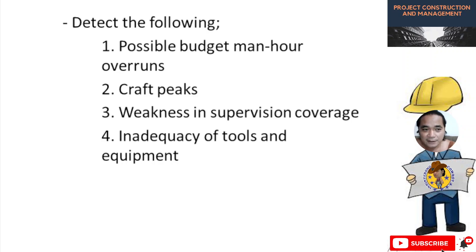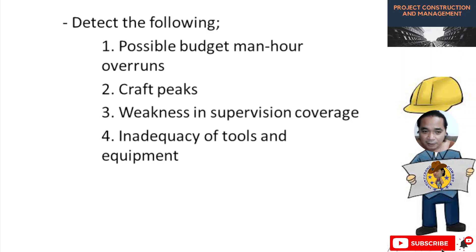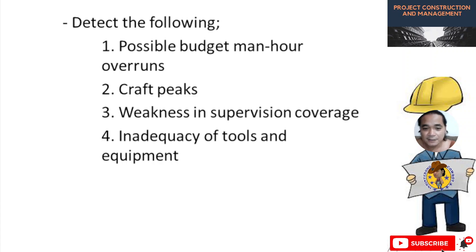If you are constantly monitoring your project, these items can be detected: number one, possible budget overruns; number two, craft peaks; number three, weakness in supervision coverage; number four, inadequacy of tools and equipment — meaning you are lacking tools and equipment which are a hindrance to completing your project. For example, if you don't have a concrete cutter or a jack hammer needed for demolishing concrete, you cannot finish the job.